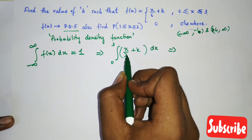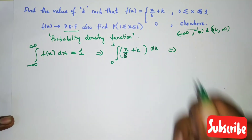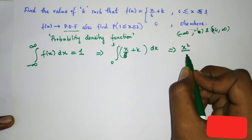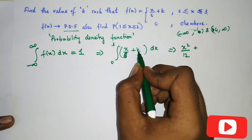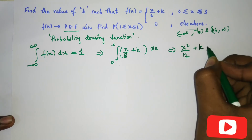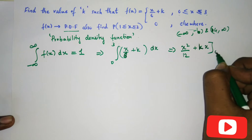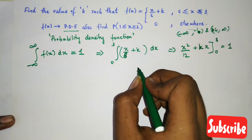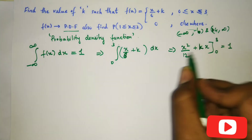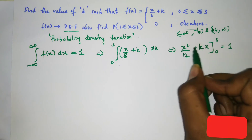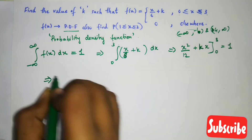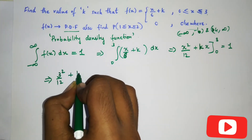For x/6, the integration becomes x²/12. The constant k integrates to k·x. So we have [x²/12 + kx] evaluated from 0 to 3. Applying the upper limit minus lower limit: when x = 0, both terms are 0, so we only need to apply the upper limit x = 3. This gives 3²/12 + k·3 = 1.